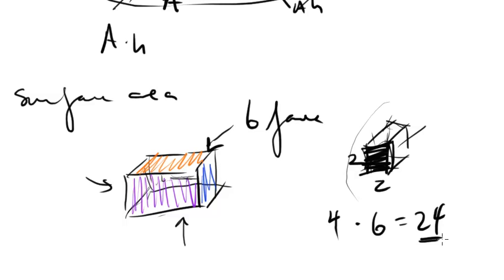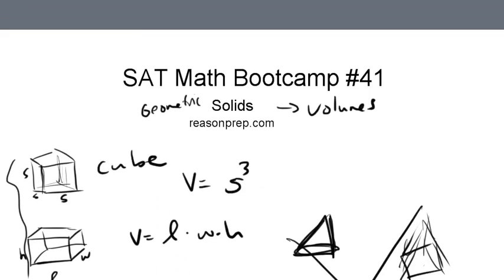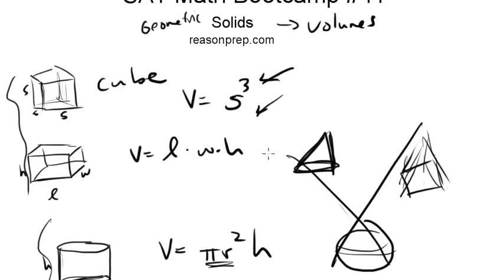And that's pretty much it when it comes to solids. Again, the key things to remember are how to figure out the volumes of cubes, rectangular prisms, and circular cylinders.